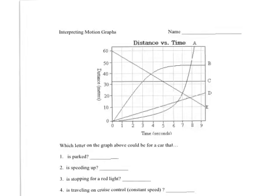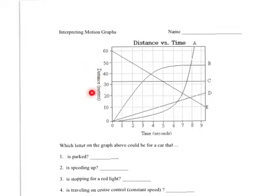Alright, motion graphs. Which letter on the graph below could be a car that is parked? In a motion graph, you always have time as your x-axis. You need to look at your y-axis — it could be distance, velocity, or acceleration. In this case, it's distance. In the case of a distance versus time graph, the slope of the line is the speed of the car.